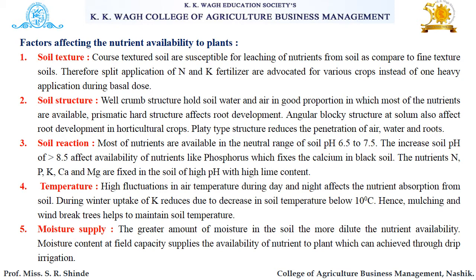The next factor is moisture supply. The greater the amount of moisture in the soil, the more dilute the nutrient availability. Moisture content at field capacity maximizes the availability of nutrients to plants, which can be achieved through deep irrigation.